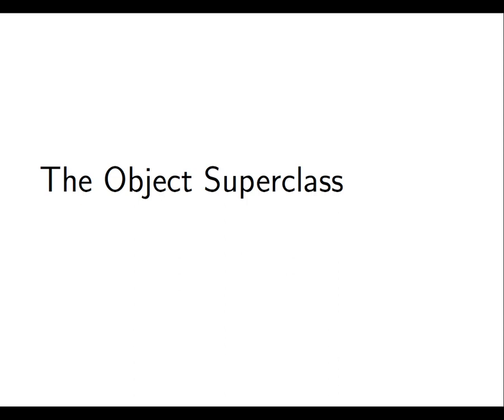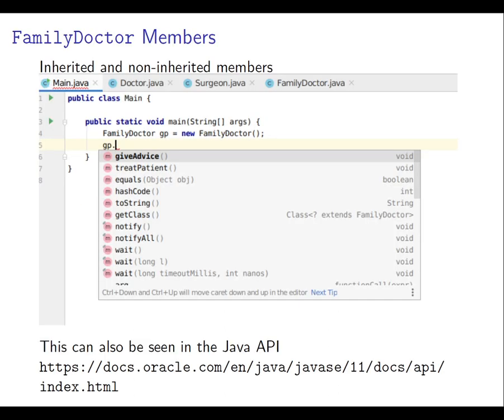Now we're going to spend a little bit of time thinking about the object superclass, which is the ultimate superclass of all classes in the Java JDK. If you are looking in your IDE, you'll find that it will helpfully auto-complete for you. So if you write a piece of code involving an object reference of type FamilyDoctor and then type GP dot, you get a pop-up showing all the methods you could invoke on such an object — some specifically from your FamilyDoctor class, and others inherited from further up the Java hierarchy, which includes at least the object class.